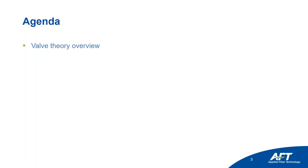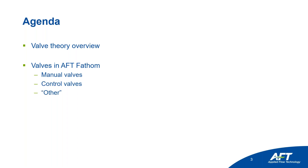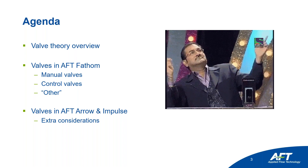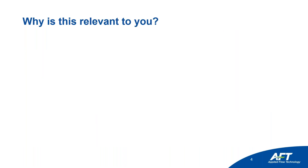Today's agenda: we're going to do a valve theory overview — probably review for a lot of you, but it doesn't hurt to refresh, especially when talking about software, since software is all about math. Then we'll go through valves in AFT Fathom, our incompressible flow software. We have four main products: Fathom, Arrow, Impulse, and Extreme. I'll go through manual valves, control valves, and other kinds of valves. Then we'll touch on Arrow and Impulse with some extra considerations.